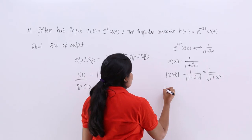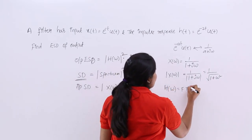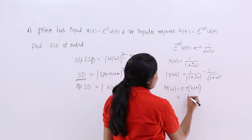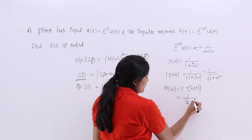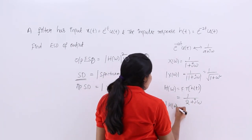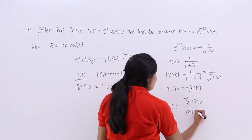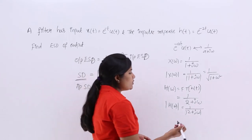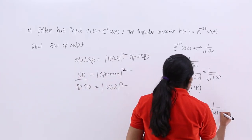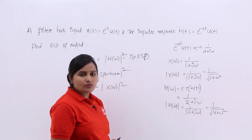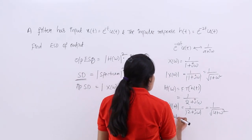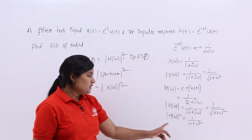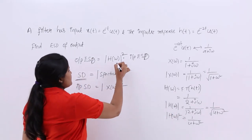Now calculating H(ω): since h(t) = e^(-2t)u(t) is also in the form e^(-at)u(t), its Fourier transform is 1/(2 + jω). The modulus |H(ω)| = 1/√(4 + ω²), since the numerator is real and |1| = 1. Therefore, |H(ω)|² = 1/(4 + ω²).